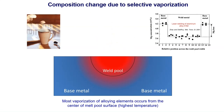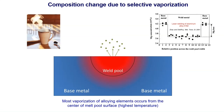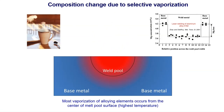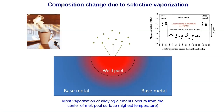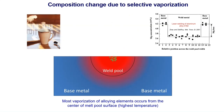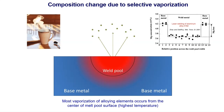Elements like aluminum, magnesium, and chromium are particularly susceptible to vaporization. For example, data shows a significant magnesium depletion in laser-welded aluminum alloy parts. The extent of composition change depends on factors such as heat source power, scanning speed, and alloy composition.